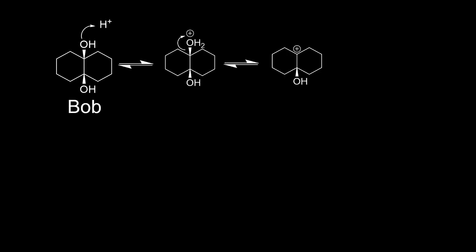Here's our starting material. Bob is tired of being a vicinal diol and wants to undergo some changes. Using some acid, either one of Bob's alcohols picks up a proton and subsequently leaves, producing a tertiary carbocation.